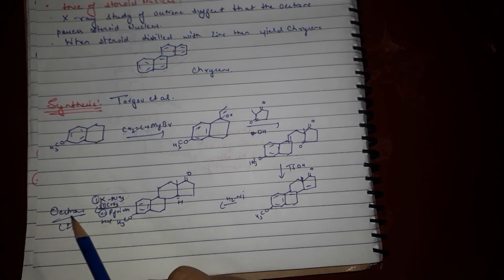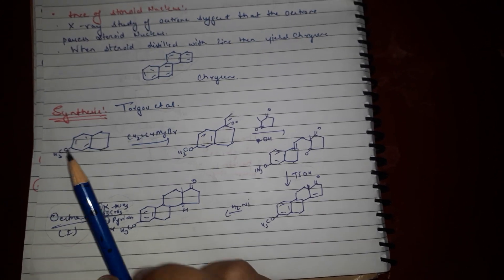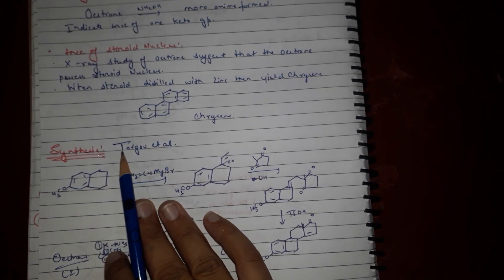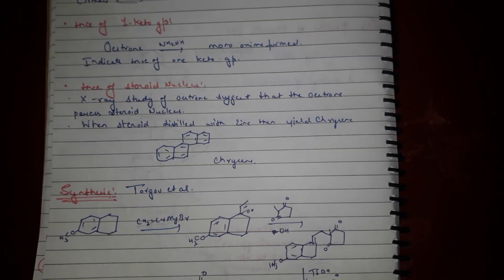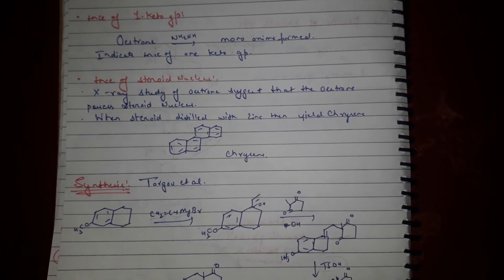Then with chromium trioxide, pyridine, and hydrochloric acid it will give estrone. This is the synthesis of estrone. Please like, share, and subscribe the channel for more videos. Thank you.